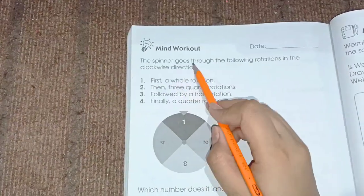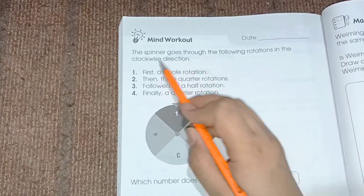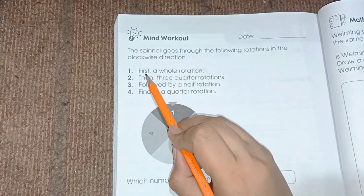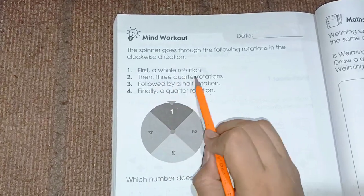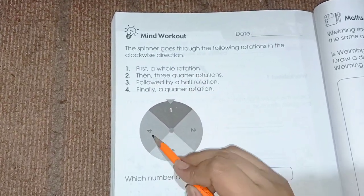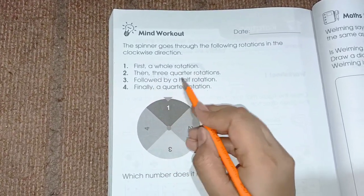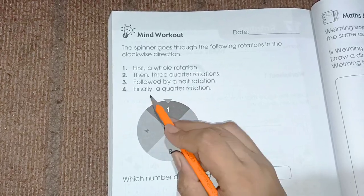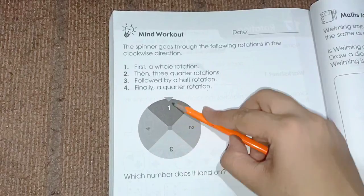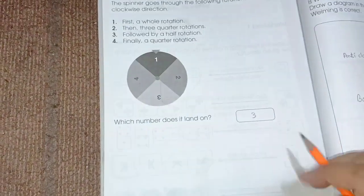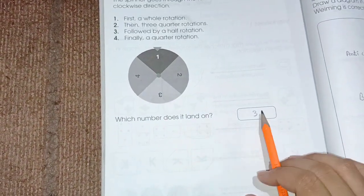Mind workout. The spinner goes through the following rotations in the clockwise direction. First a whole direction, complete one, then three-quarter rotation here, then followed by a half rotation there, then finally a quarter rotation which is at three. Quarter means half three. So which number does it land? It lands on three.